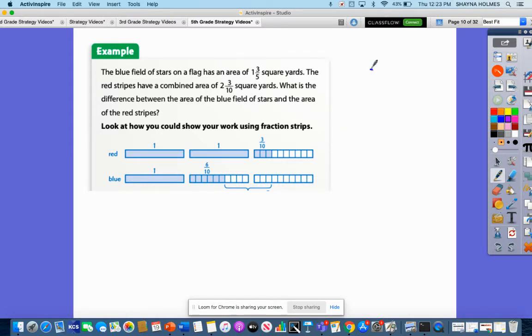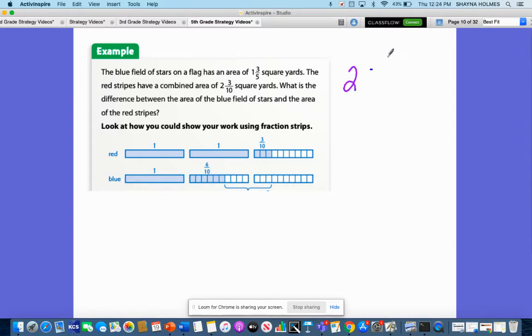Well, if I go ahead and set this up like a subtraction problem with fractions, it is going to look like this. So if I find an equivalent fraction for 3 fifths to have a common denominator of 10, what it would look like.